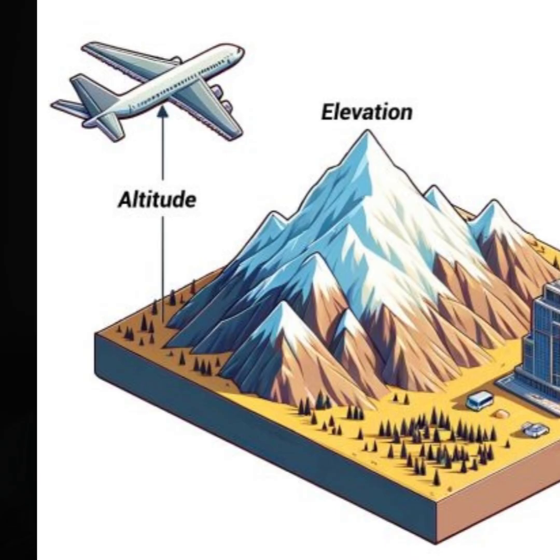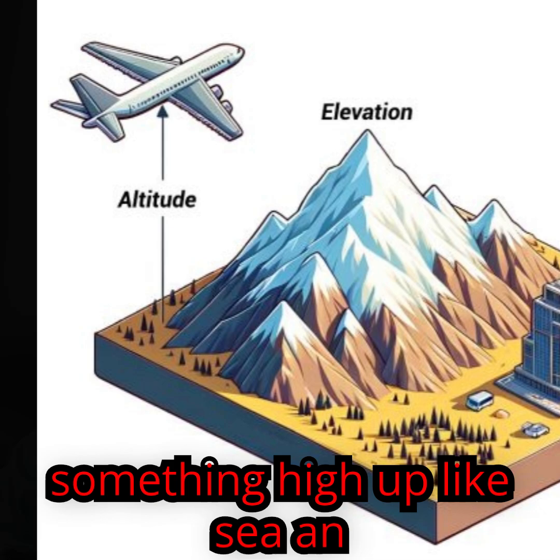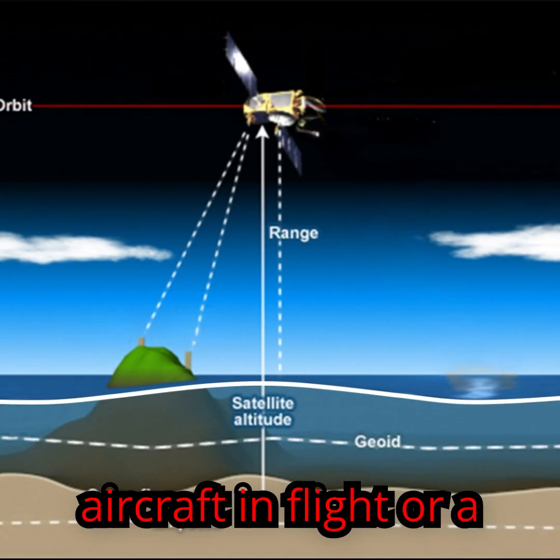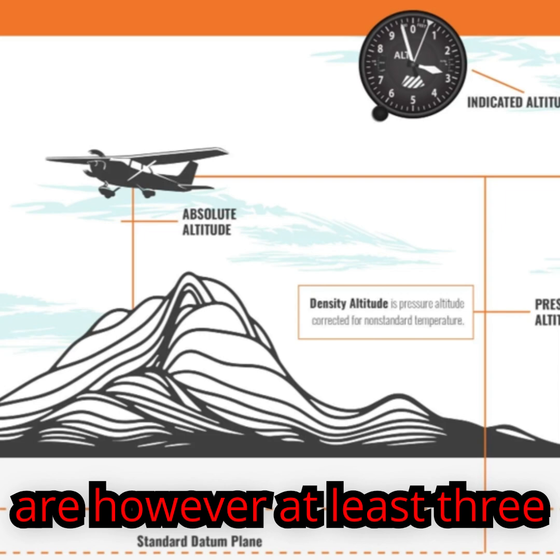Elevation is generally referred to the ground level above the main sea level. Altitude usually refers to something high up, like an aircraft in flight or a spacecraft in orbit.